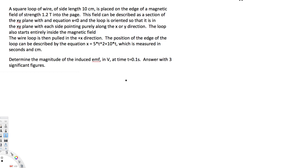Let's look at this problem. This question asks: a square loop of wire of side length 10 centimeters is placed on the edge of a magnetic field of strength 1.2 tesla. The length is 10 centimeters, the field is 1.2 tesla, and the position is given. The question is asking us to find the induced EMF.